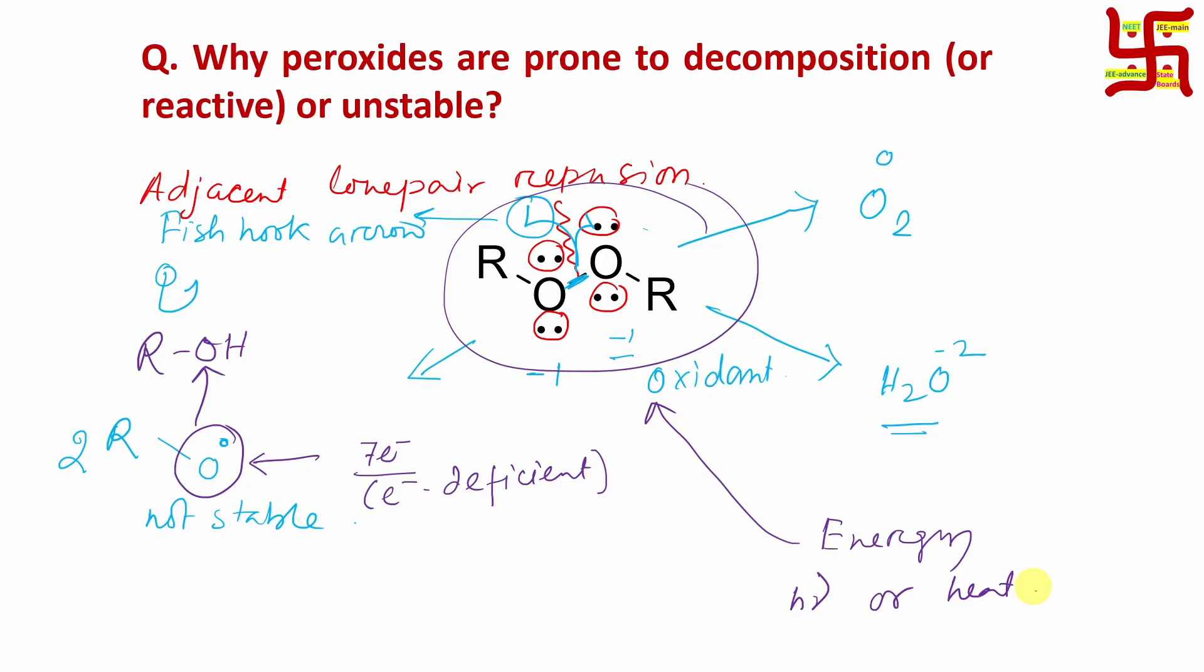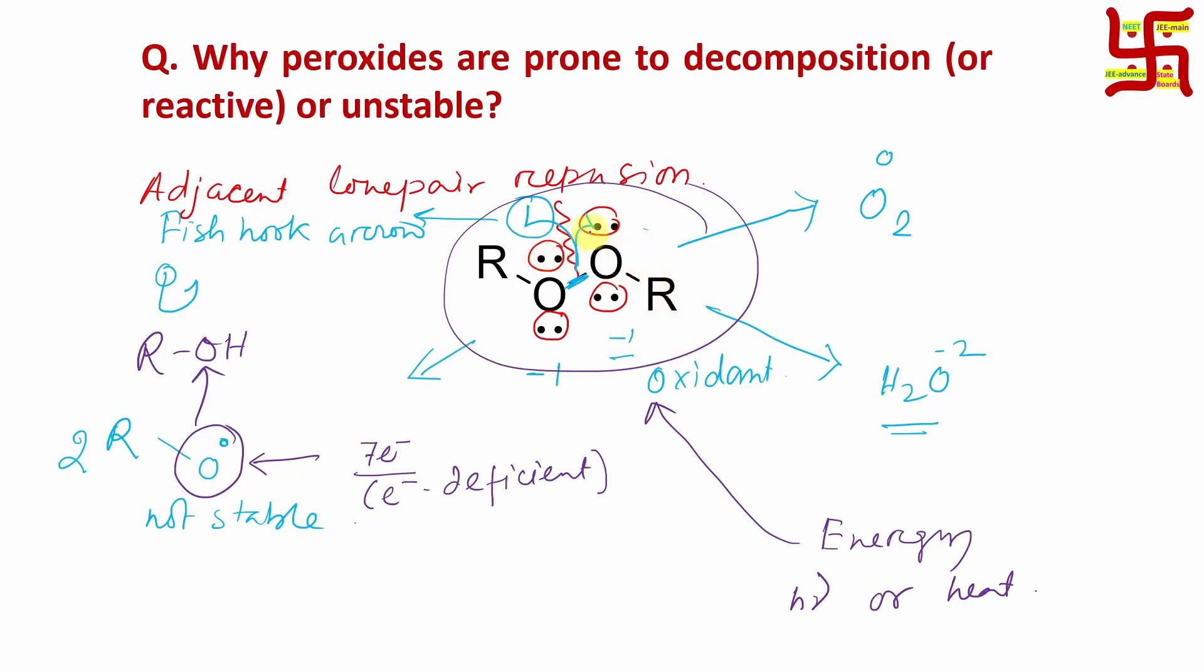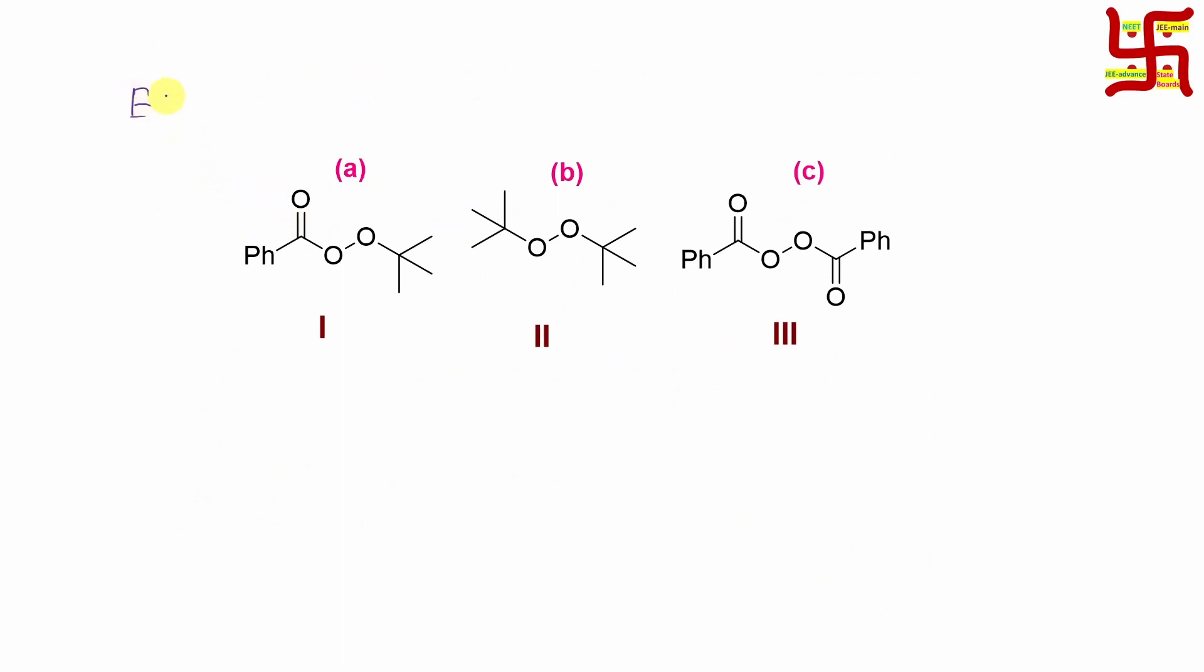So now, can I manipulate or tune its stability based on our requirement? Yes, that's possible. Now what was the problem for peroxide stability? Just sometime before I told, this lone pair-lone pair repulsion. So can I reduce this lone pair-lone pair repulsion? How? By reducing the electron density. Remember, electron is not at all a particle. It has dual property, particle character as well as wave character. So if I put an electron withdrawing group attached to peroxide, then what will happen? It will pull some electron density towards itself. So on oxygen atom, the electron density will be less, so they will be more stable. That's true.